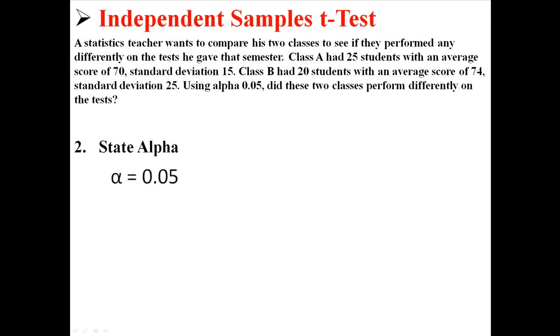Now the alpha level is just 0.05, because I said use 0.05. That's usually what it's going to be. It might be 0.01 or something like that, but usually it's going to be 0.05.